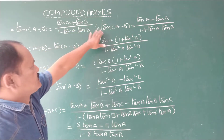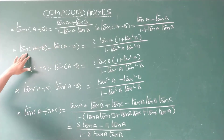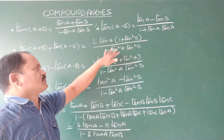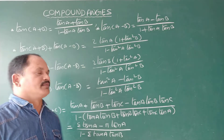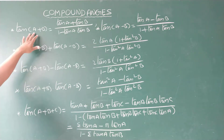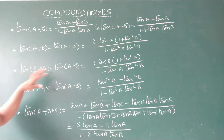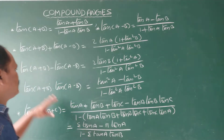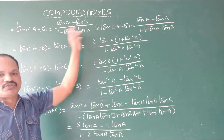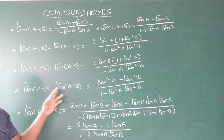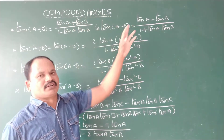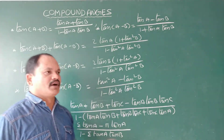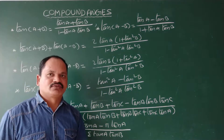Sum of these two expansions: tan A plus B plus tan A minus B is nothing but 2 times of tan A into 1 plus tan squared B, all over 1 minus tan squared A times tan squared B. Difference: tan A plus B minus tan A minus B equals 2 times of tan B into 1 plus tan squared A, all over 1 minus tan squared A times tan squared B. Product of these two expansions: tan A plus B into tan A minus B is tan squared A minus tan squared B over 1 minus tan squared A times tan squared B.